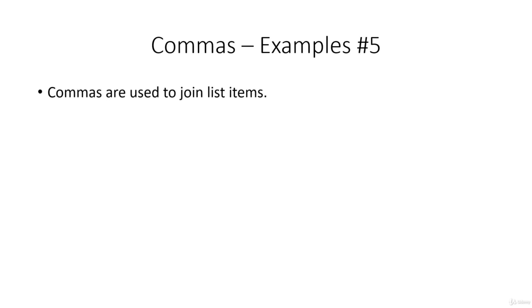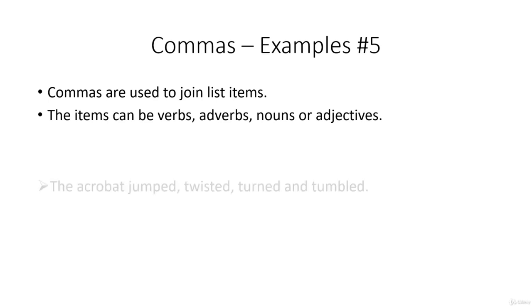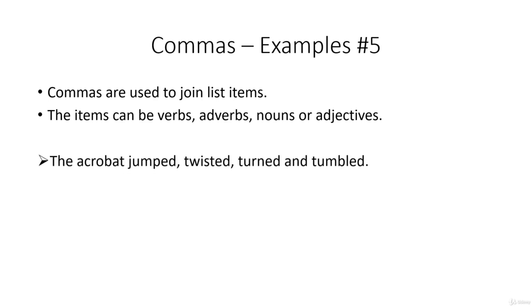We can join lists of items. And the items can be verbs, adverbs, nouns, or adjectives. And we'll look at an example of each. So for verbs, the acrobat jumped, twisted, turned, and tumbled. And commas between the individual items.